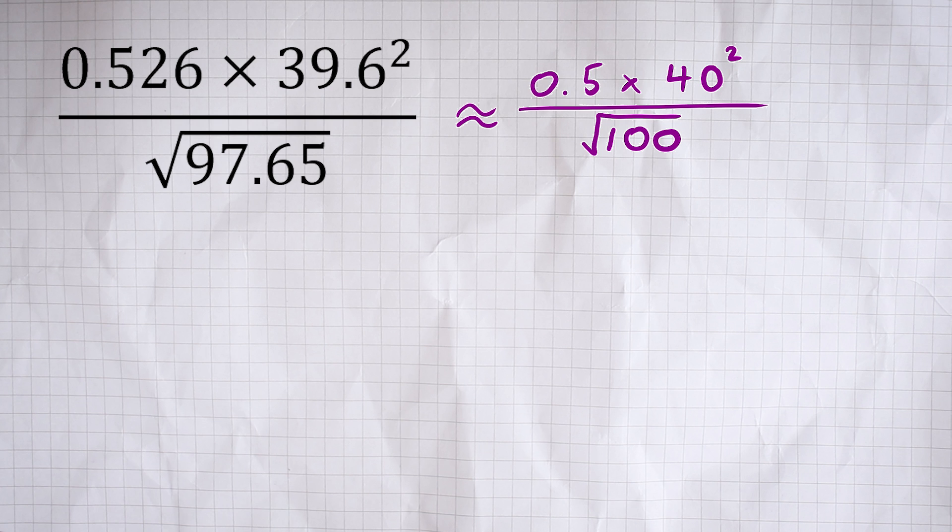So once we've rounded those off, it suddenly looks a lot easier. We've got 0.5 multiplied by 40 squared, divided by the square root of 100. Well, the square root of 100 is 10, isn't it? So actually what we've got is 0.5 times 40 squared divided by 10. 40 squared just means 40 times 40—well, 4 times 4 is 16, so 40 times 40 is going to be 1,600.